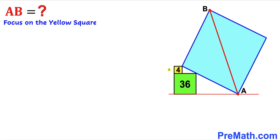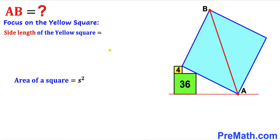Let's focus on this yellow square whose area is 4. Let's recall the area of square formula: area equals s squared, where s represents the side length of the square. Therefore the side length of this yellow square is going to be 2, since 2 squared gives us 4.